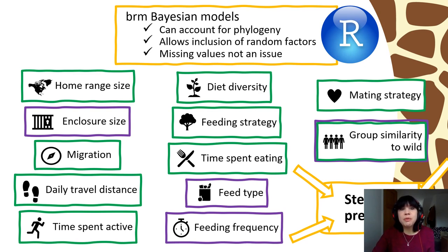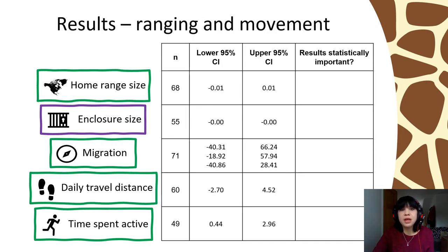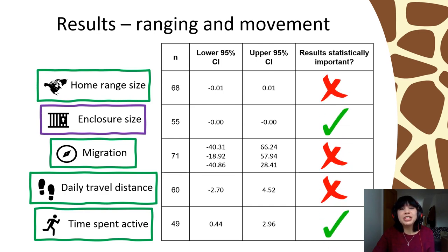Before showing the results, I want to note that because of missing values in the dataset, sample sizes vary between individual models. Looking at ranging and movement: enclosure size and the time an animal spent active in the wild were found to be important in predicting stereotypy. Home range size, daily travel distance, and migratory strategy do not appear to play a role.